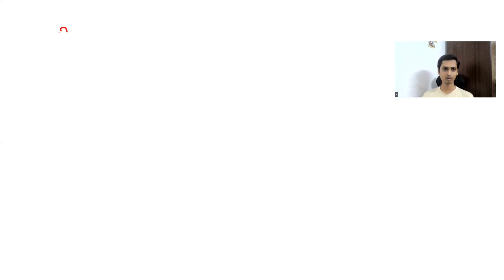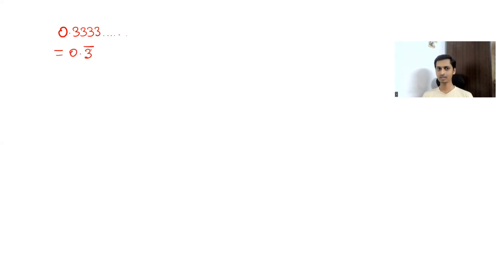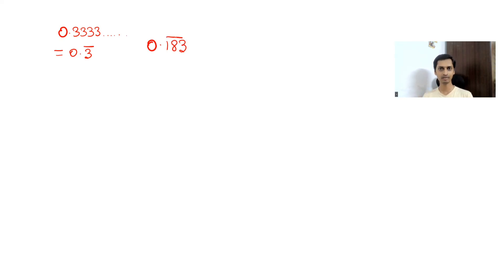What is a vulgar fraction? If you take decimal numbers, you will have some recurring numbers. For example, 0.33333... is a recurring number — the same number repeating infinitely. We write this as 0.3 bar. Now, given a value like 0.183 bar, we want to find its fractional equivalent, which is called a vulgar fraction.